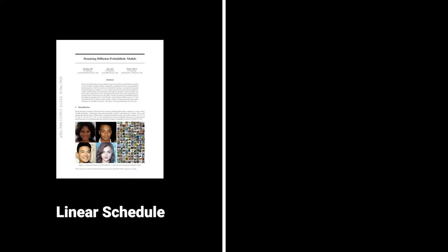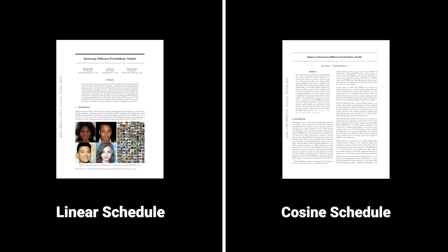To give some intuition: if we apply the schedule to an image, the transformation looks like this. The authors from OpenAI found this linear approach to be suboptimal, especially at the end of the noising process, because the last couple of time steps already seem like complete noise and might be redundant, and the information is destroyed too fast. As a result, they created their own called the cosine schedule. You can see the difference between both schedules in the following image — the cosine schedule destroys the information more slowly and solves both problems of the linear schedule: too rapid destruction of information, and too uninformative at the end.